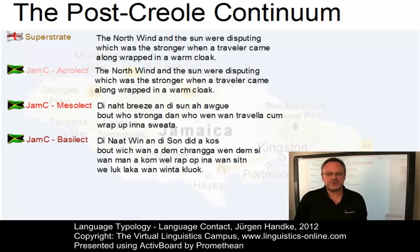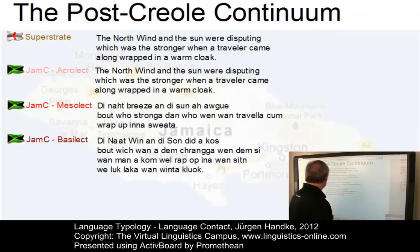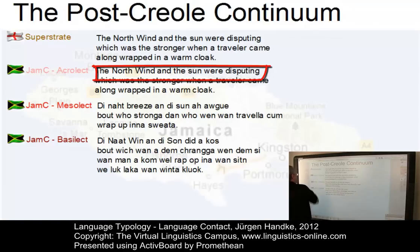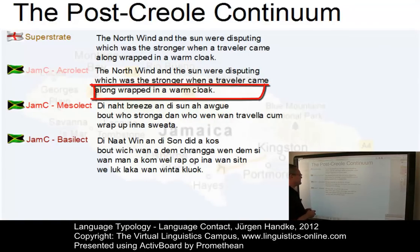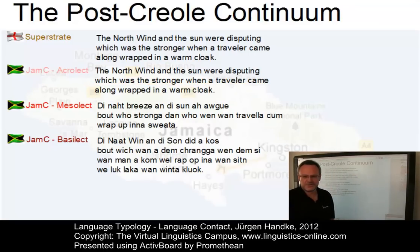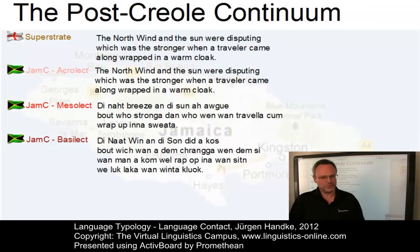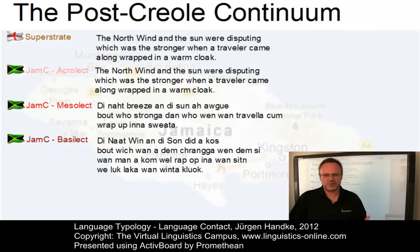Let us now listen to some versions of Jamaican Creole on the basis of the post-creole continuum. The first one is an acrolect version: 'The north wind and the sun were disputing which was the stronger, when a traveller came along wrapped in a warm cloak.' So this was the acrolect version — we can relatively easily understand that. It is, if you wish, Jamaican English.